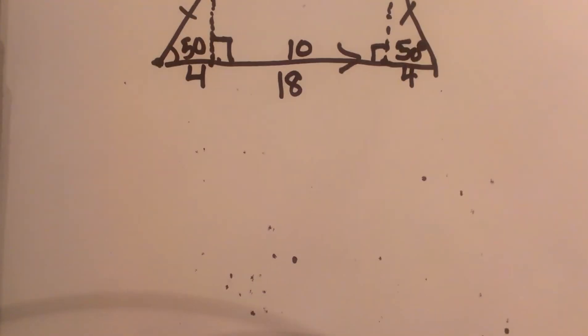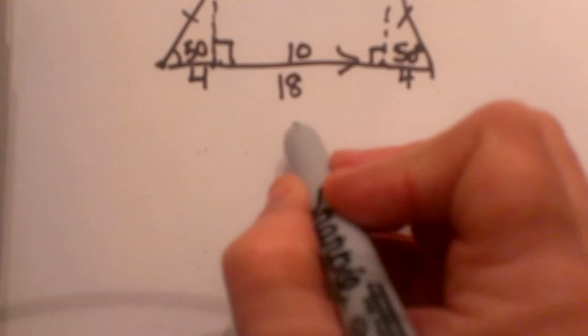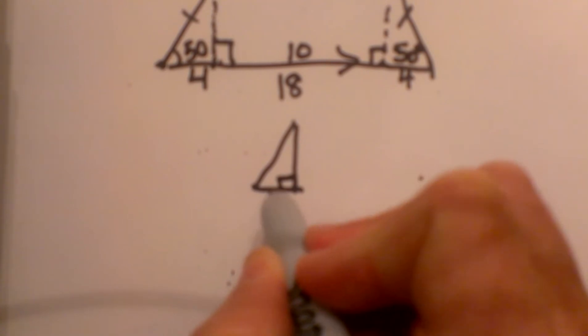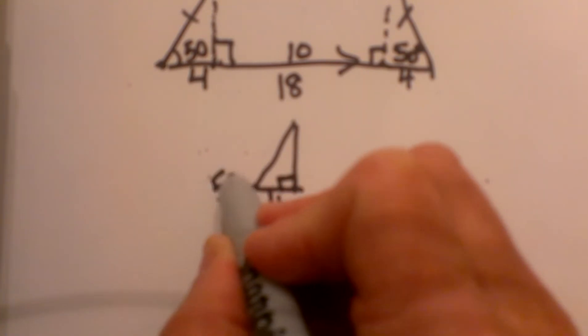Now what we are going to do is redraw that triangle down here and use trig to find the height of the trapezoid. So here we are where this base is 4 and this angle over here is 50 degrees.